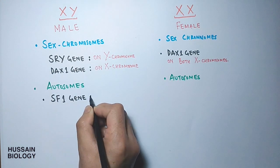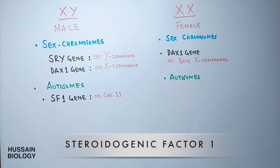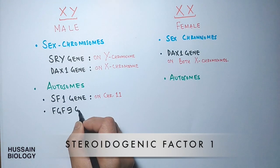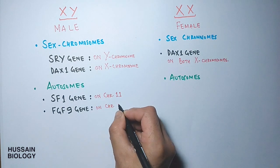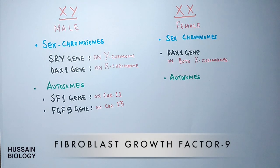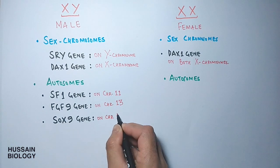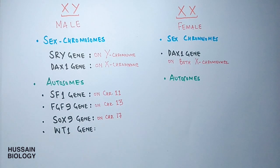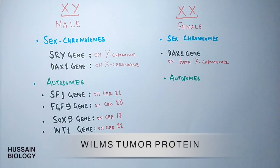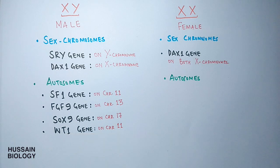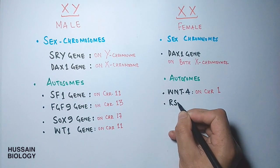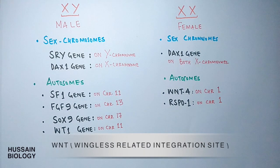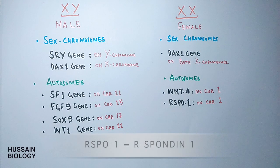Testis differentiation is influenced by the following autosomal genes: SF1 (steroidogenic factor 1) on chromosome 11; FGF9 (fibroblast growth factor 9) on chromosome 13; SOX9 (SRY-related HMG box) on chromosome 17; and WT1 (Wilms tumor protein) on chromosome 11. For ovarian differentiation, two important genes are WNT4 and RSPO1, both present on chromosome 1, which influence the sex cords turning into cortical cords.